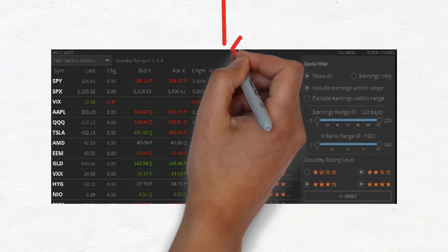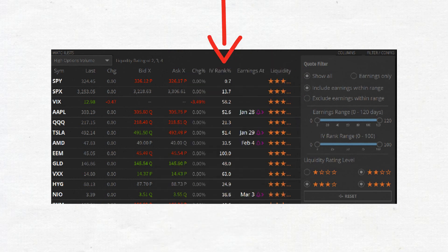Tastyworks for instance even allows you to scan and filter securities by IV rank. This is one of the easiest ways to find securities with very low or very high implied volatility values.